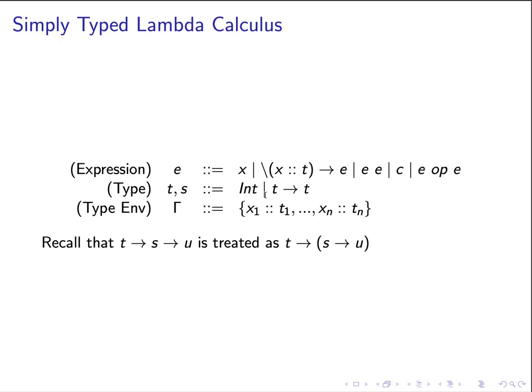Or a function type denoted by t arrow t. So the first t will be the input type, the second t will be the return type. Notice that we can have multiple input parameters for the function type.